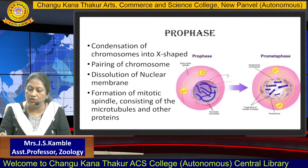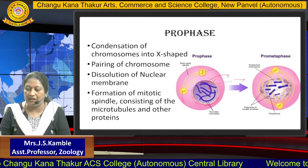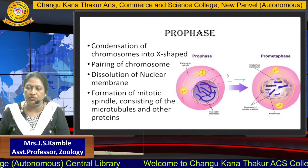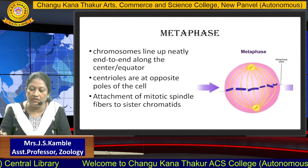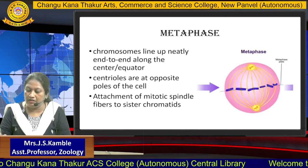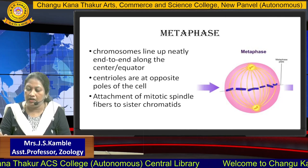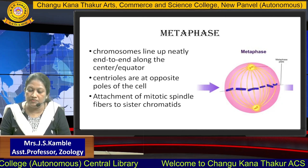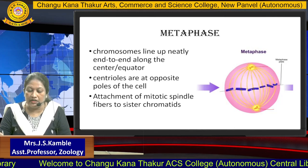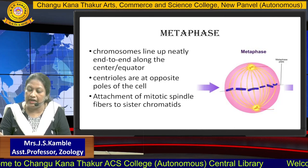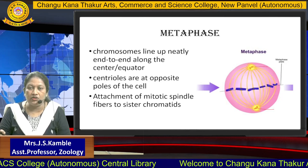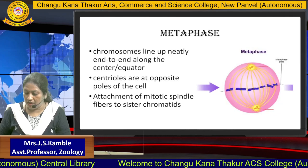After prophase, the cell goes to the next phase — metaphase. Before entering metaphase, it has to pass through pro-metaphase, which is just before metaphase. In metaphase, the chromosomes line up neatly end-to-end along the center or the equator. The centrioles, which are formed within the cell, now move to their respective poles, so these centrioles are at opposite poles of the cell. The attachment of the mitotic spindle fiber to the sister chromatids is carried out, and with the help of the mitotic spindle, these sister chromatids are pulled to their respective poles.